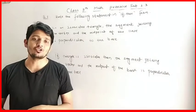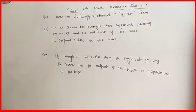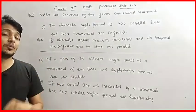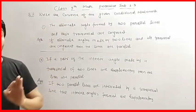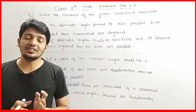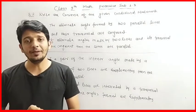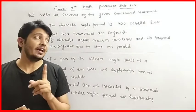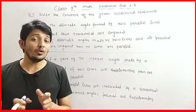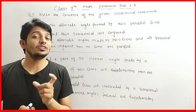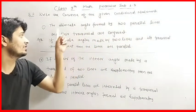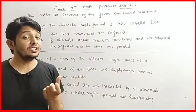Now we are going to solve the second question, which also has three sub-questions. In the second question, we have to write the converse of the given statements. Converse means we interchange the antecedent and the consequence — the statement that comes after 'if' and the statement that comes after 'then' are swapped. The first sub-question says: the alternate angles formed by two parallel lines and their transversal are congruent.